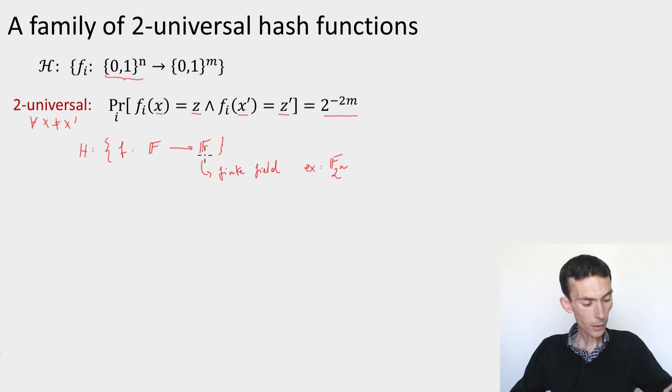What's the family of functions? Very simple. H is equal to all affine functions. So it's the set of all f_ab that go from F to F, where a and b are both elements of the finite field. And what they do is they map x to ax plus b.